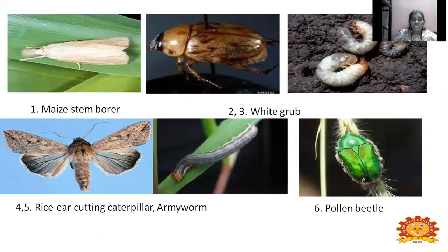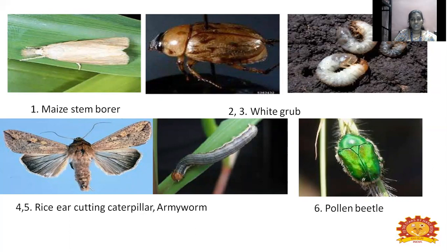The images of major pests: the first is the maize stem borer moth. The second and third images show white grub — the adult white grub and the immature larval or grub stage, which is the immature stage of white grub in the Coleoptera family. The fourth and fifth images are of the armyworm, Mythimna separata, showing the adult and the larva. The last image is of the flower beetle or pollen beetle.